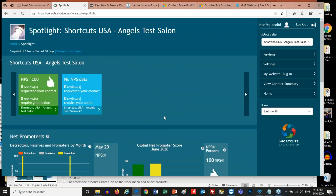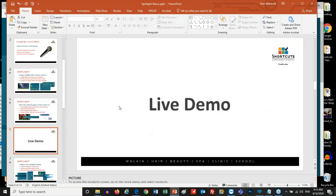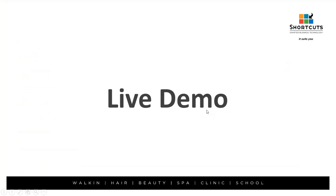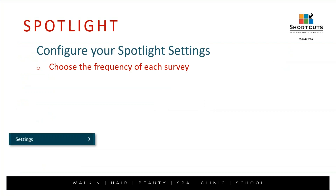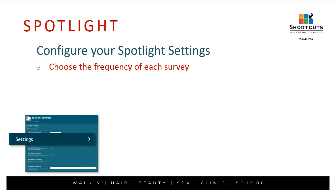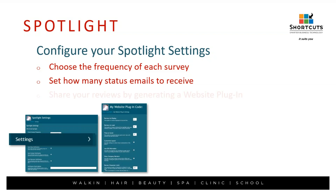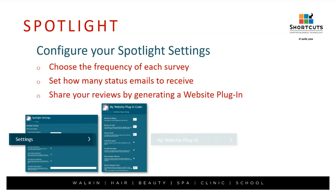So once you actually get a survey, what are you supposed to do with it? How do you read the information? How do you share it? There are a few buttons you should be comfortable with once you're in Spotlight. The first thing you'll do is set the frequency for all your surveys. In Spotlight, you're going to go to Settings and choose the frequency.